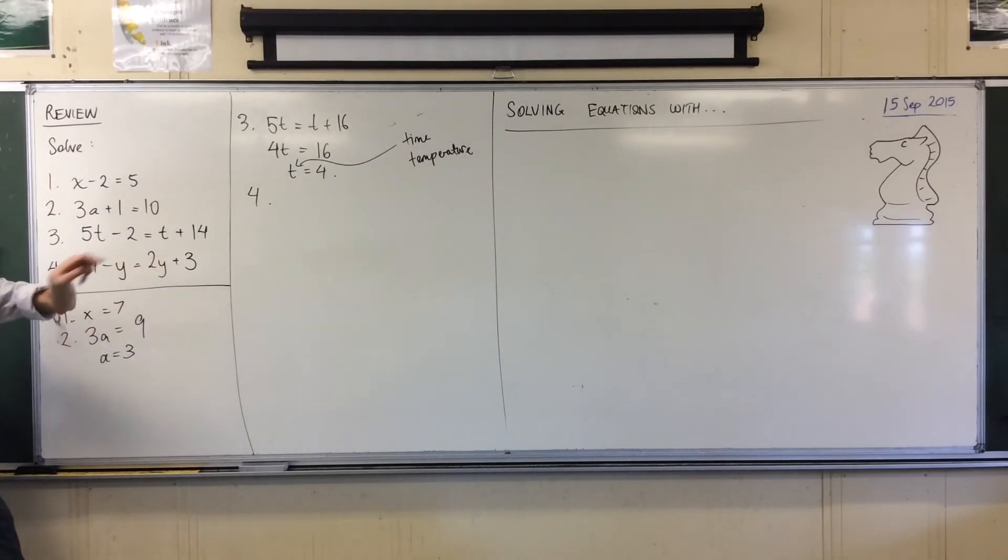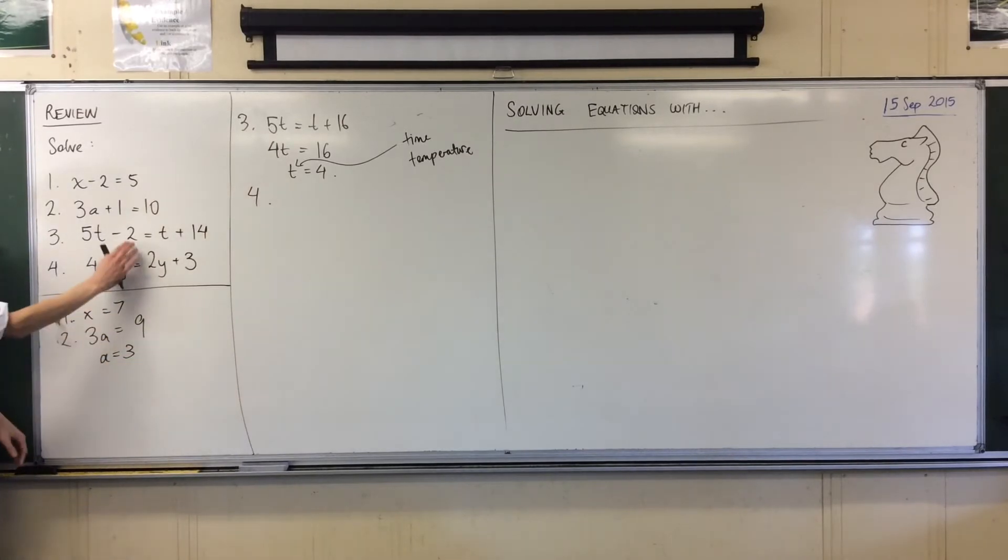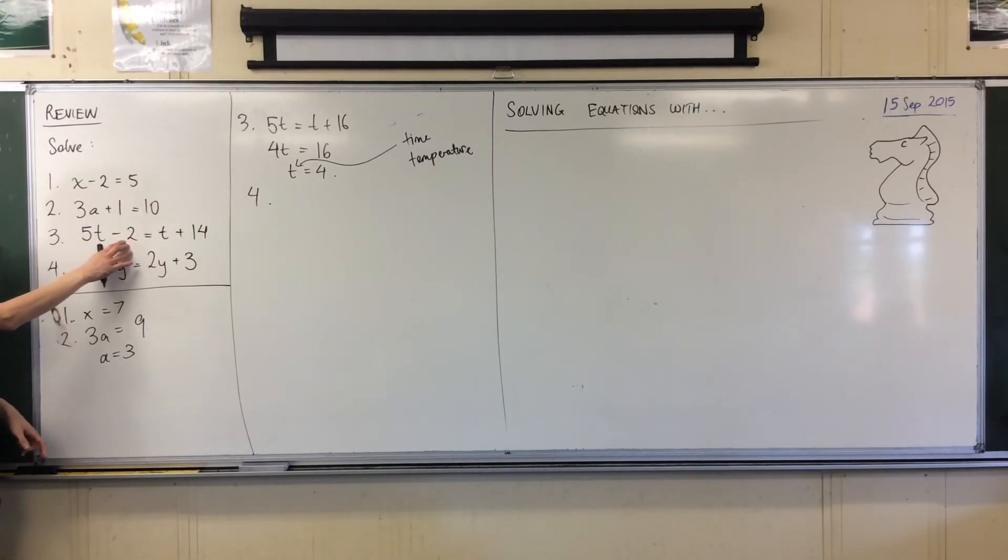4 minus y equals 2y plus 3. Okay, now I'm going to try to approach it the same way we did this previous one, right? The first thing we did was we got rid of the number on the left hand side.